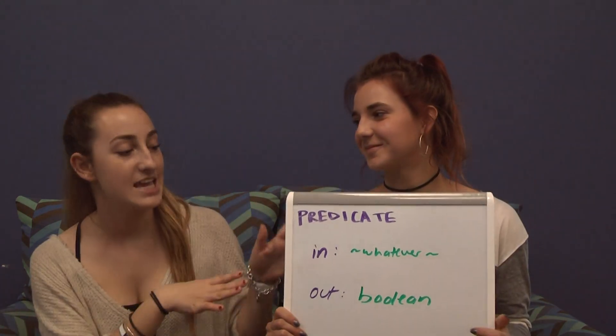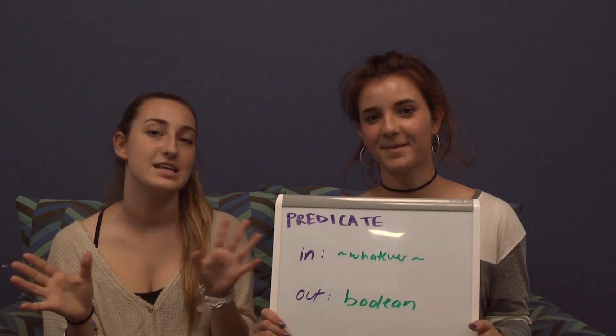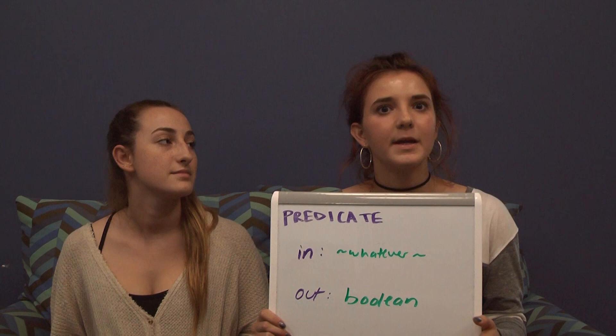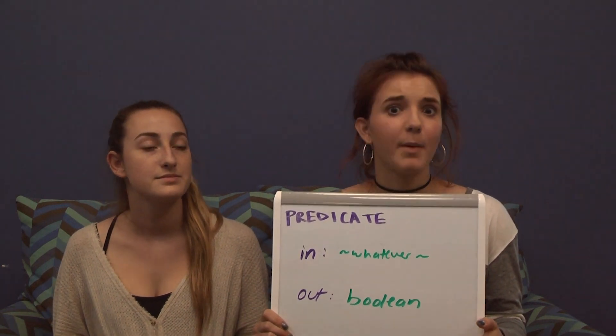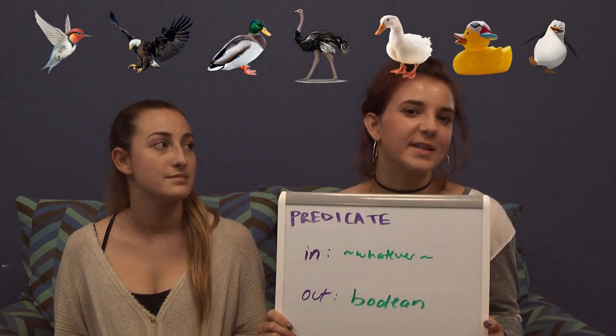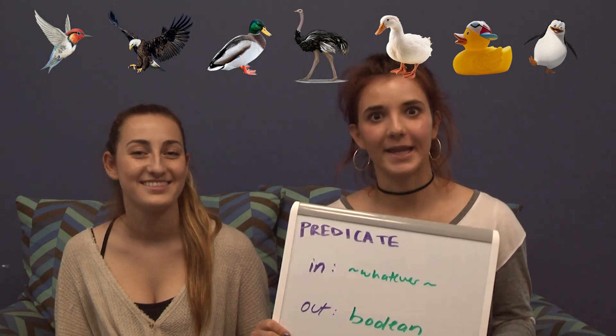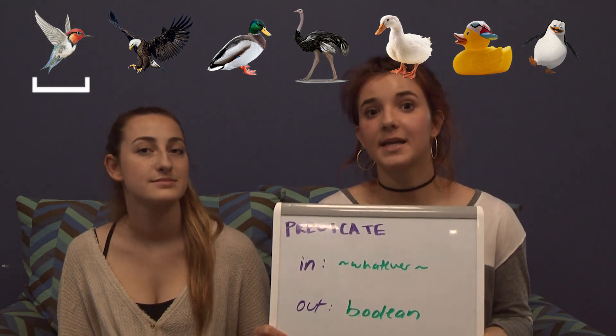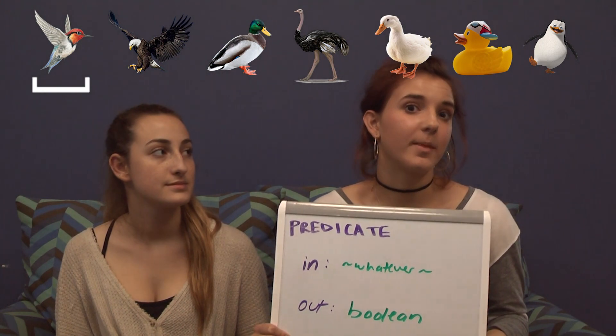Filter takes in a set and a function called a predicate function, which will test every single one of the elements in the set. The predicate is the type of the function which is going to take in an element of any type and then return a boolean. For example, if we had a list of birds and we wanted to filter it to find all the ducks, our predicate would take in a bird and our test condition would be to see whether or not the bird is a duck.